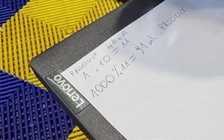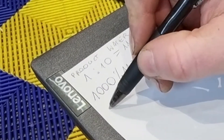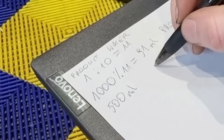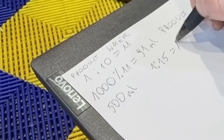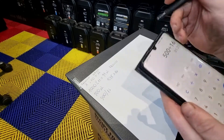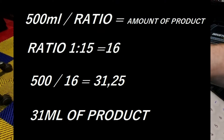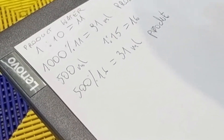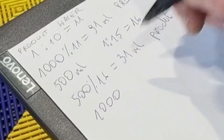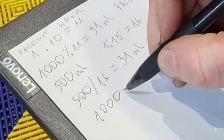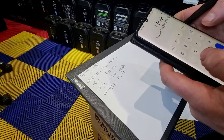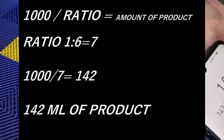We can calculate any ratio this way. For example, 500 milliliters of ready solution at ratio 1 to 15: one part product plus fifteen parts water equals sixteen parts, so 500 divided by 16 gives us 31 milliliters of product. Another example: one liter of ready solution at ratio 1 to 6 — one plus six equals seven, so 1000 divided by 7 gives us approximately 142 milliliters of product.